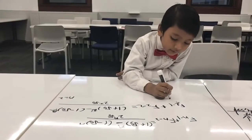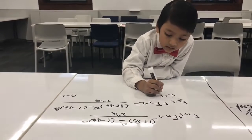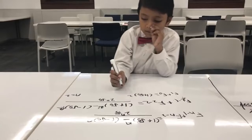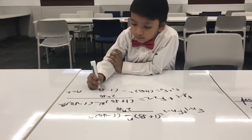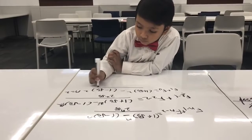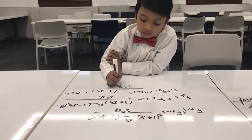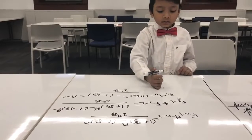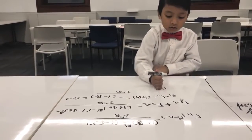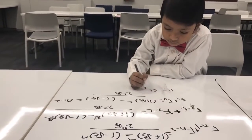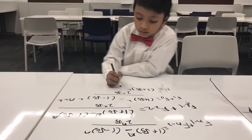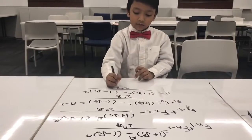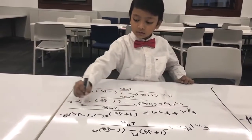So, 2 minus 1 is F1, plus 2 minus 2 is F0, equals 1 plus square root of 5 squared, minus 1 minus square root of 5 squared, over 2 squared times square root of 5. And since F1 plus F0 equals 1 plus 0, which is just 1, we need to verify this equals 1.